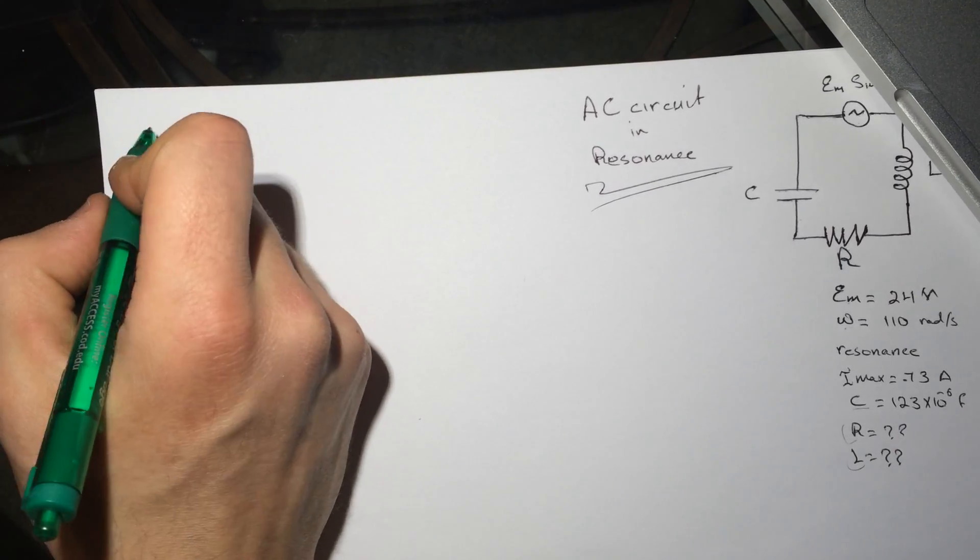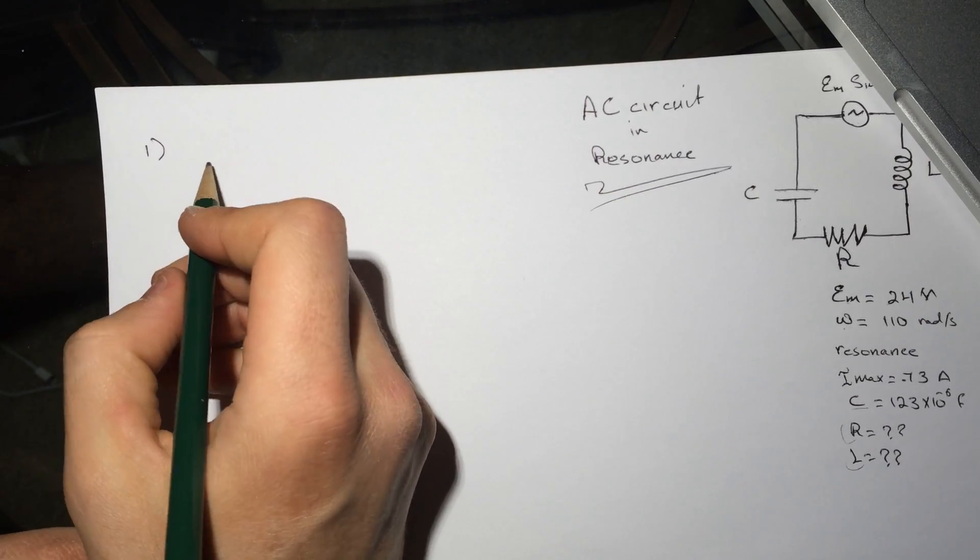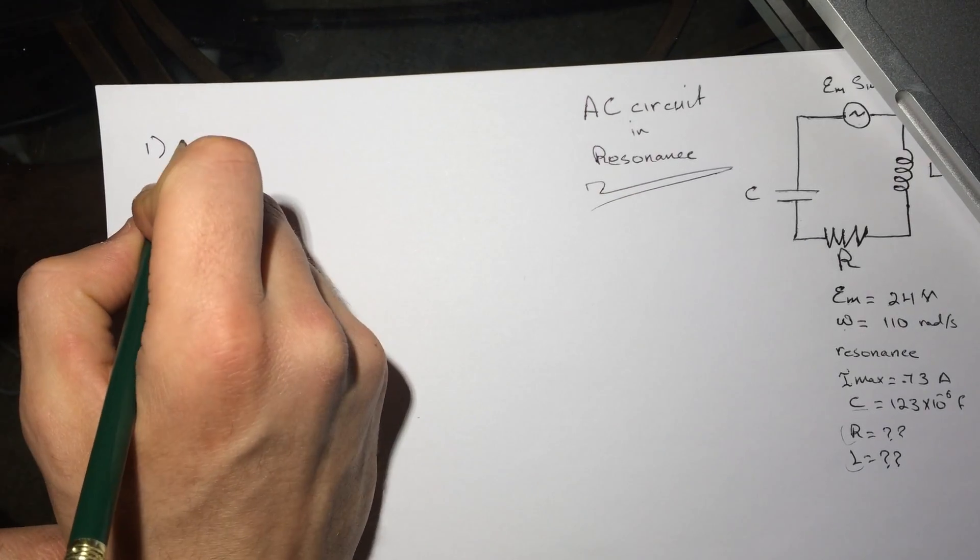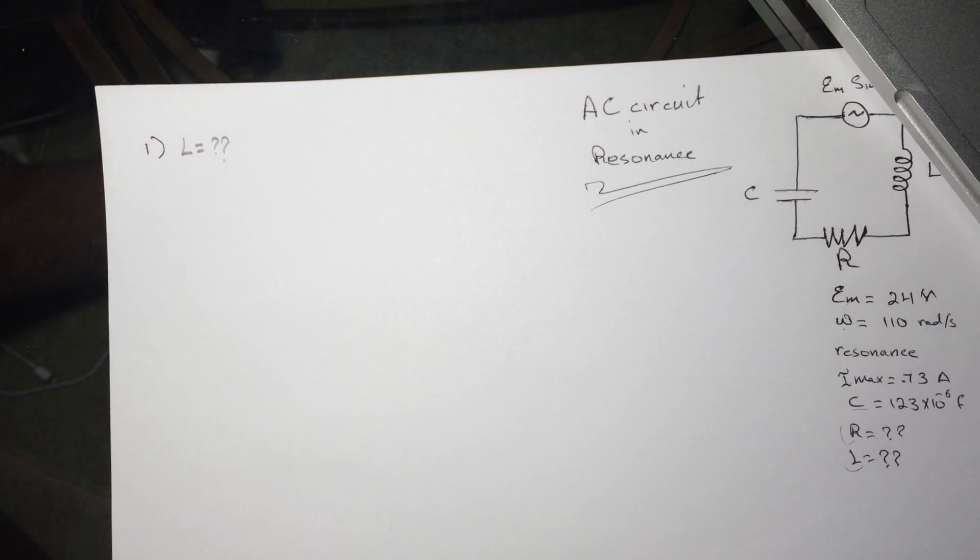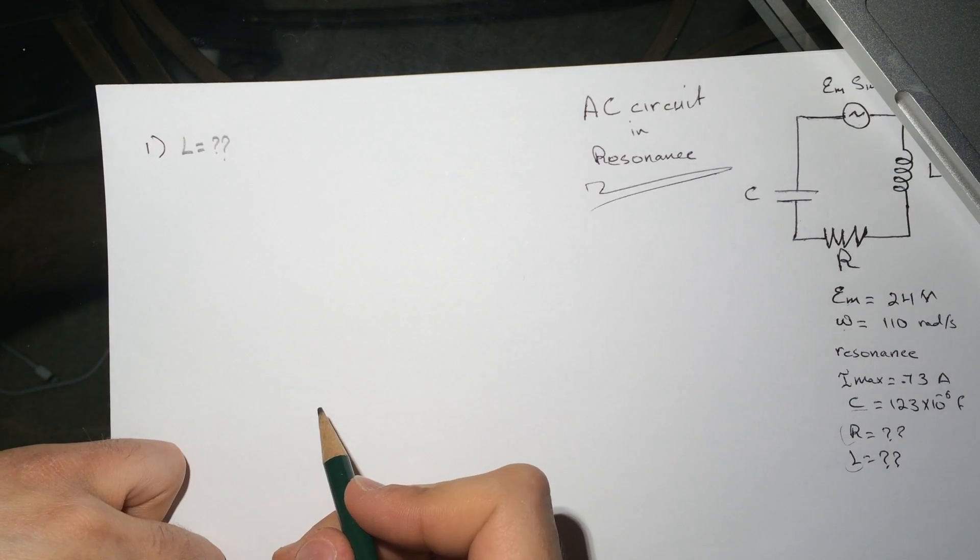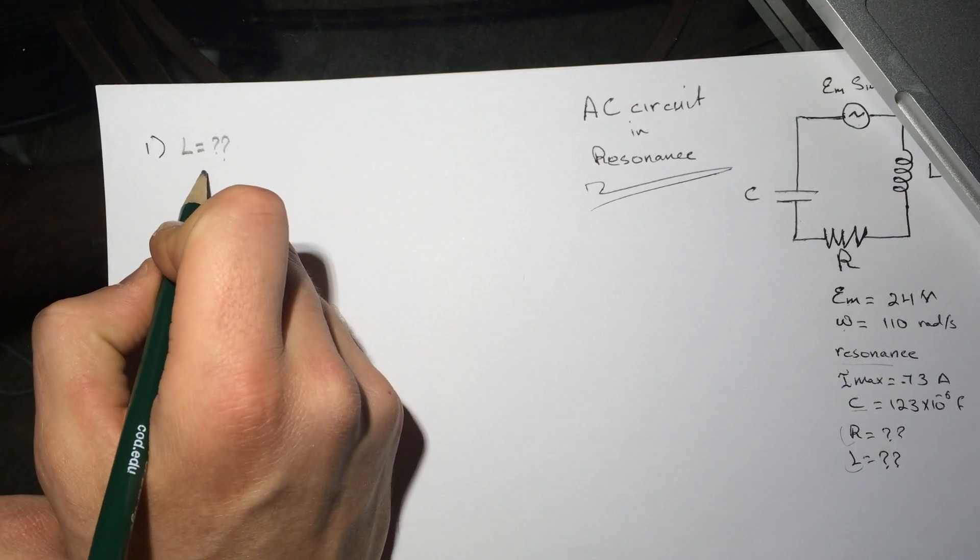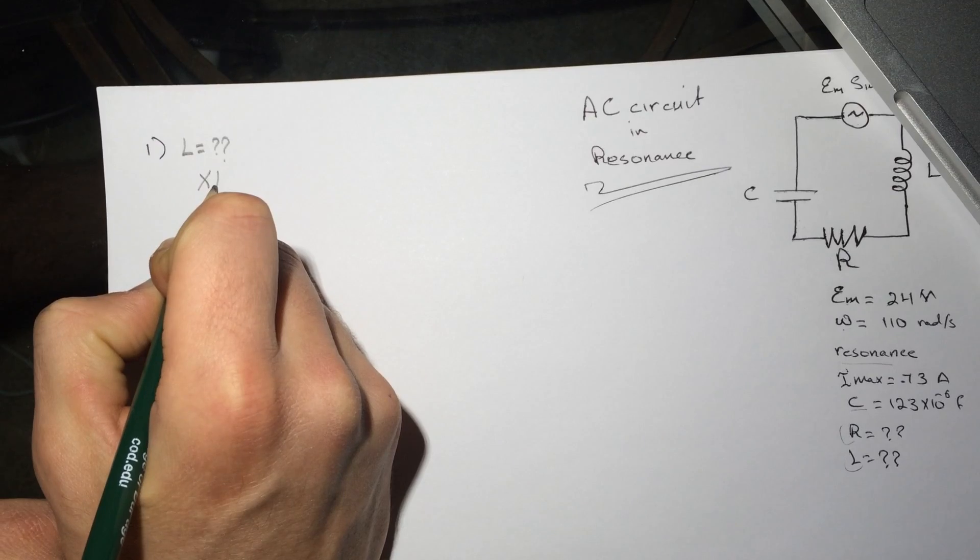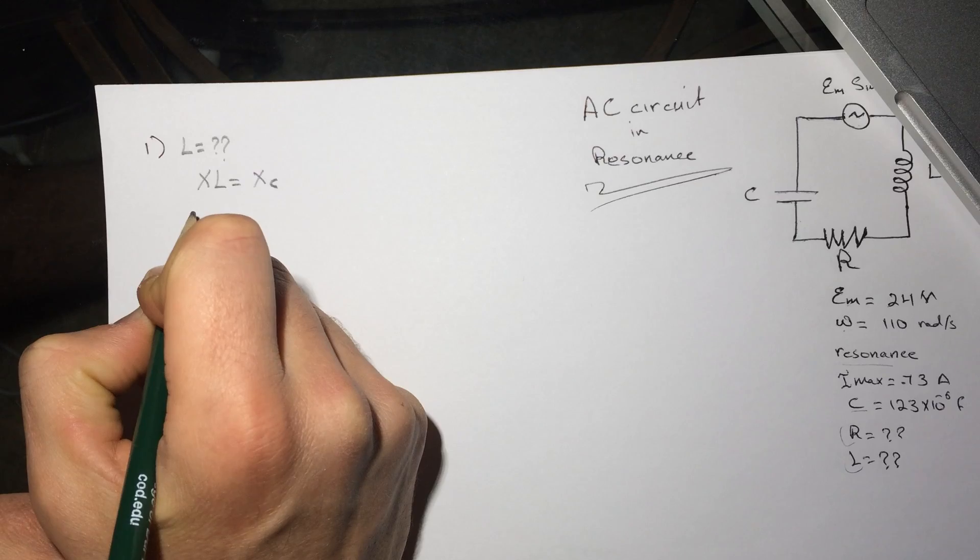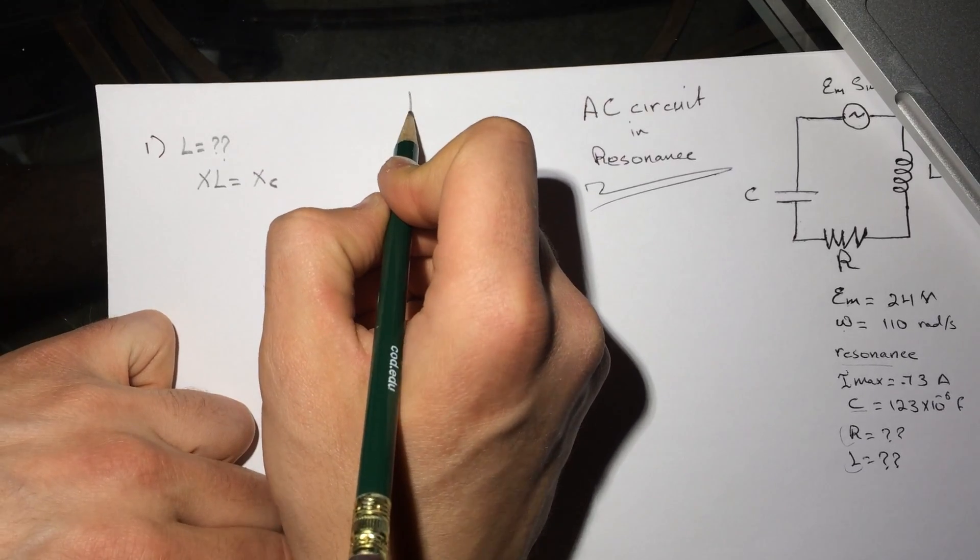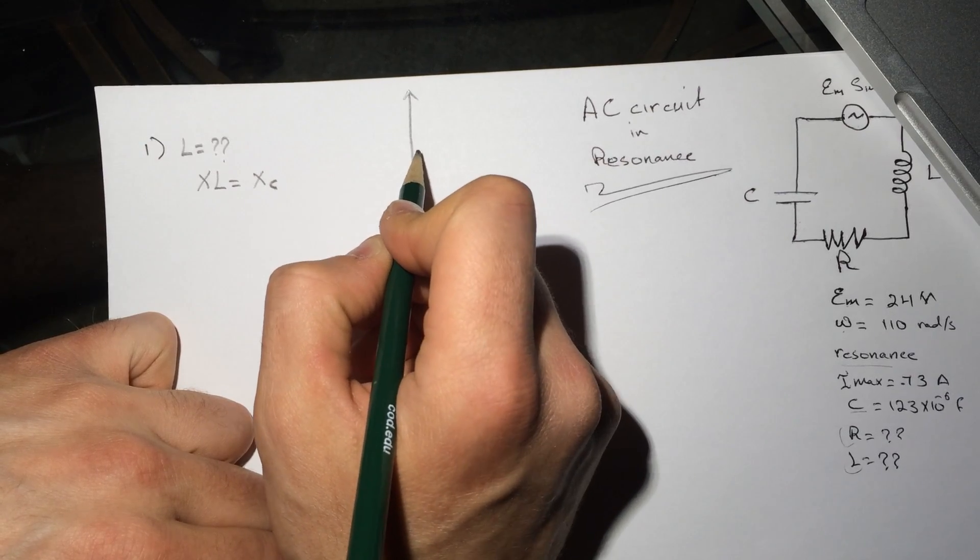The first question is asking what is L, so they want to find the inductance. We know the fact that it's in resonance, which means that XL equals XC. You can see that from the diagram for this to be in resonance.